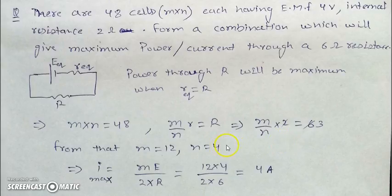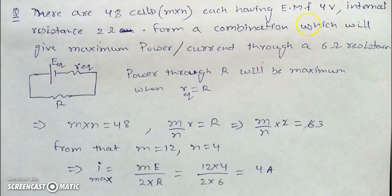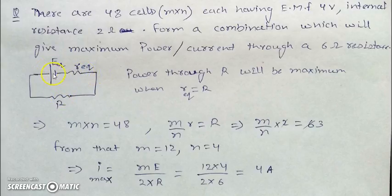From m × n = 48 and m/n = 3, we get m = 12 and n = 4. The equivalent EMF is 12 × 4 = 48 V. The total resistance is 6 (internal) + 6 (external) = 12 ohms. So maximum current = 48/12 = 4 amperes.